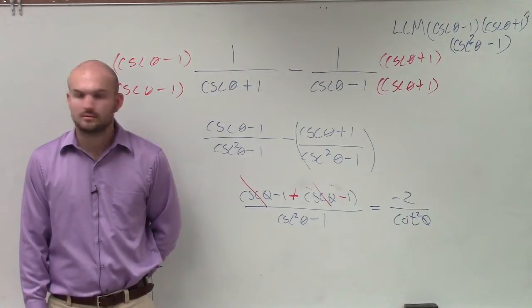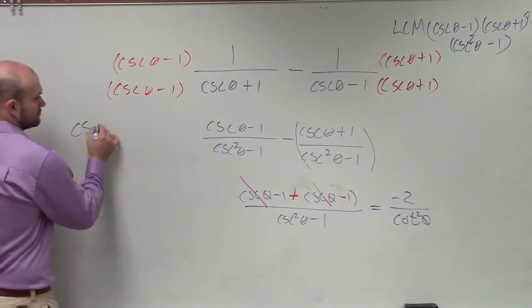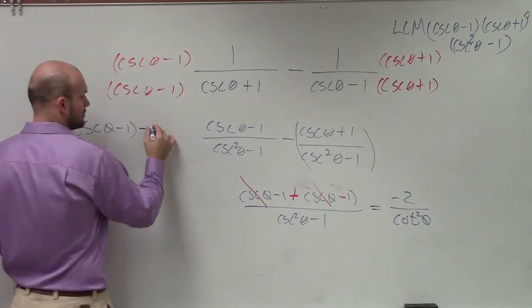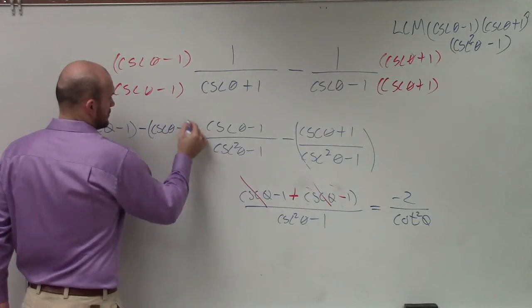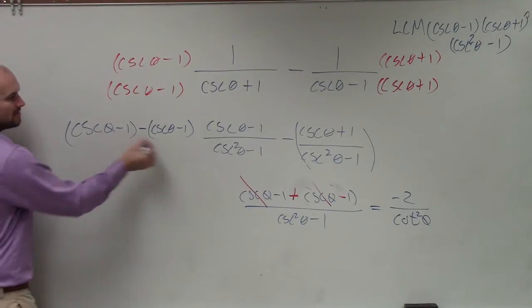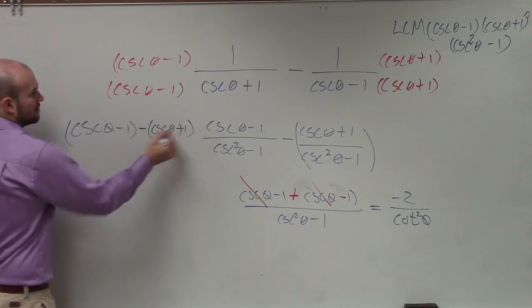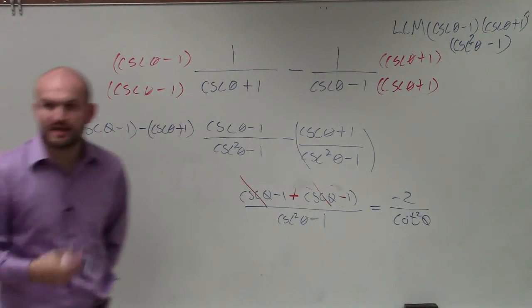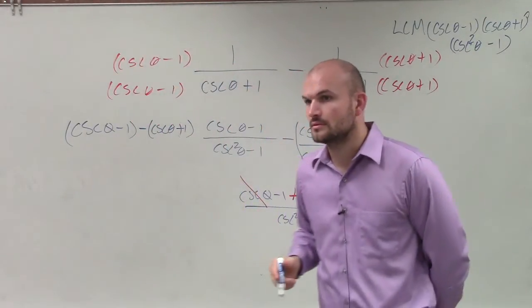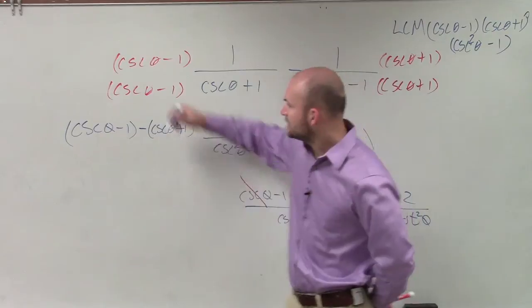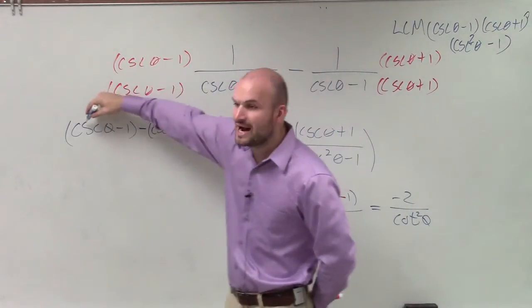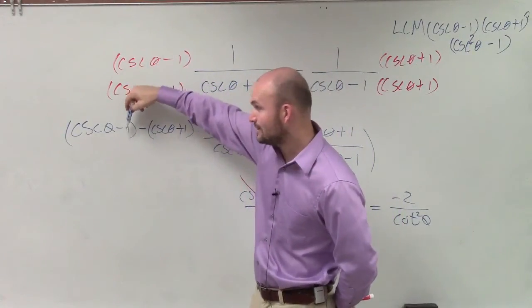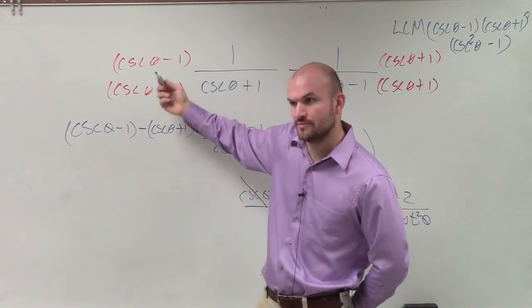How did you get negative 2? It's negative 1 minus 1. This is a positive cosecant. Positive cosecant minus cosecant is 0. Negative 1 minus 1 is negative 2.